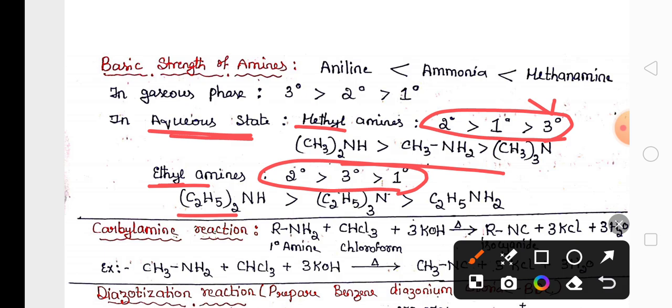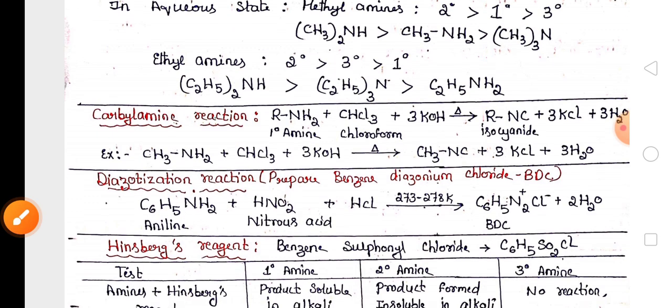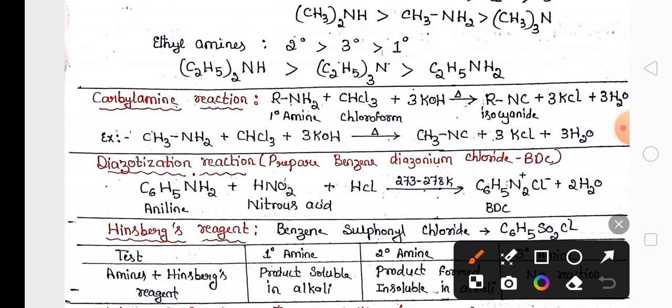In case of ethyl amine, secondary amines are more basic and primary amines are least basic. Then carbylamine reaction is very important where aromatic primary amines and aliphatic primary amines react with chloroform and KOH to give foul smell isocyanide.